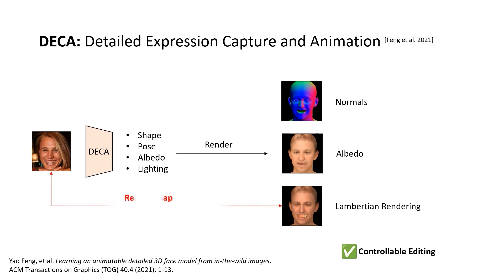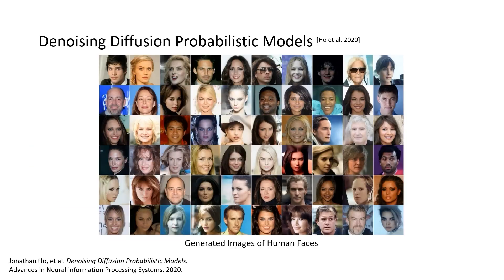However, it is important to note that there is a significant gap in photorealism between the Lambertian rendering and the real input photo. Diffusion models, on the other hand, are capable of generating extremely photorealistic images of human faces. However, the generation process cannot be easily rigged or controlled in a physically meaningful manner.